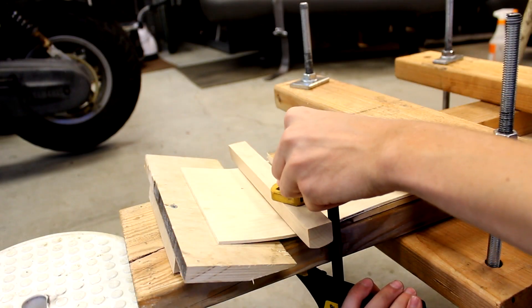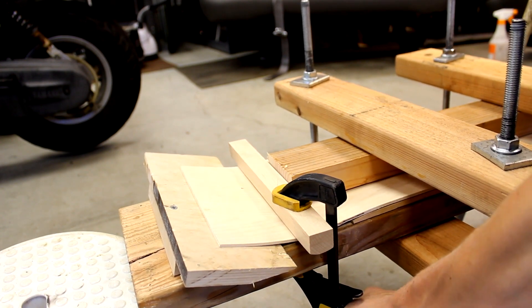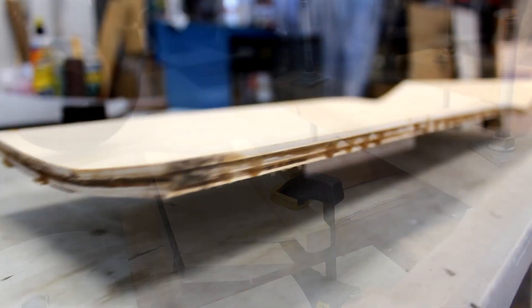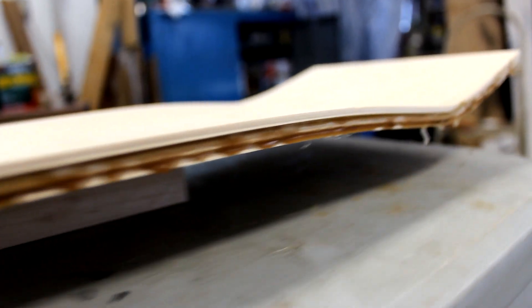You might have to add extra shims and clamps to give your board that perfect shape and avoid delamination, so get creative. Also, keep in mind that this method is not just limited to boards with concave and single kicks.